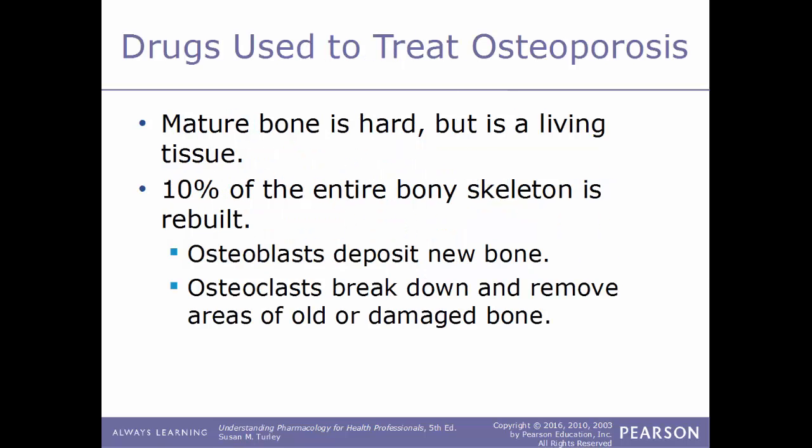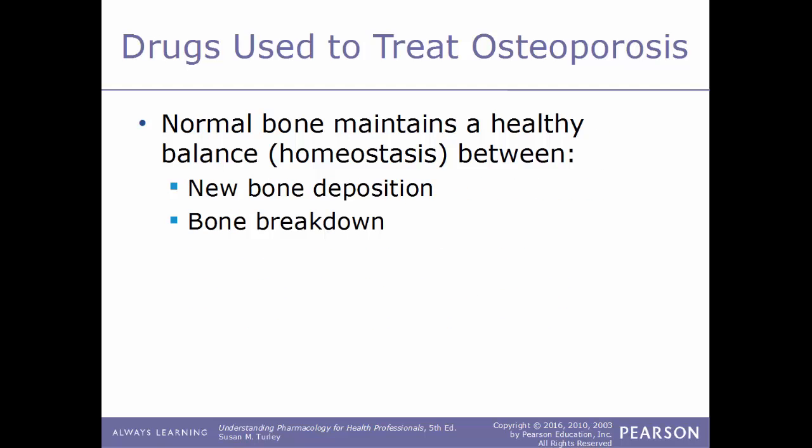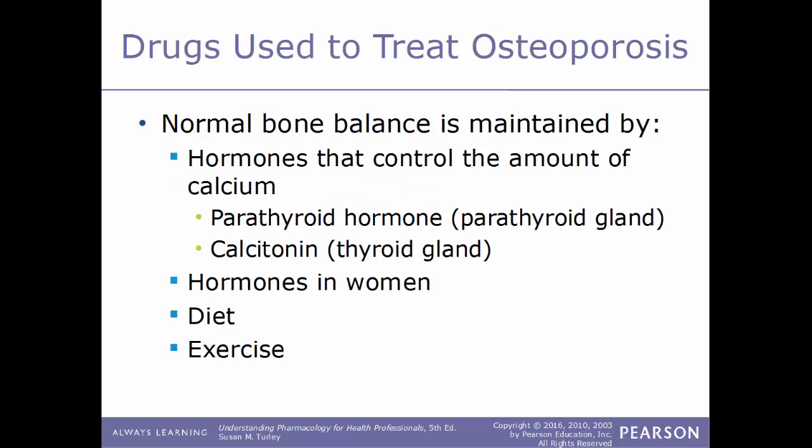Now we'll move into drugs used to treat osteoporosis. Mature bone is a dynamic living tissue — approximately 10% of the skeleton is rebuilt each year. There are two main types of cells: osteoblasts, which build new bone, and osteoclasts, which break down and remove old and damaged bone. Normal bone maintains a healthy homeostasis between bone being deposited and bone being broken down. This balance is maintained by hormones including parathyroid hormone from the parathyroid gland and calcitonin from the thyroid gland, as well as hormones found in women, diet, and exercise.